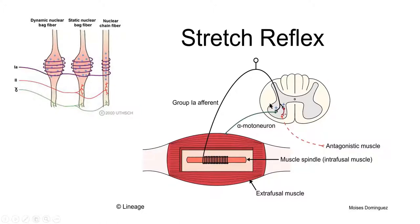The sensory neuron also synapses with another neuron through an interneuron, since it cannot directly synapse with that alpha motor neuron. Through the interneuron, it synapses with another alpha motor neuron that prevents contraction of the antagonistic muscle by releasing inhibitory neurotransmitter. This maintains the stretch reflex.